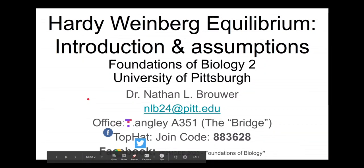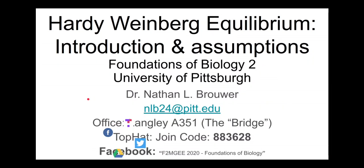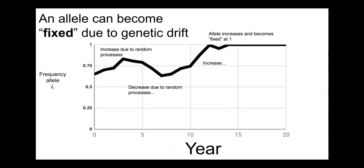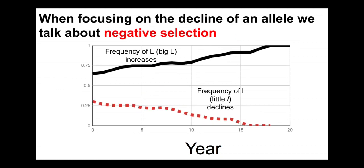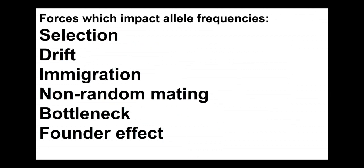In this presentation I will introduce what we mean by Hardy-Weinberg equilibrium and what the assumptions behind it are. Alleles can change due to a number of reasons — they can even become fixed, as we talked about in a previous presentation. Allele frequencies can bounce around due to genetic drift and even become fixed, or they can change due to positive or negative selection. There are many different forces that can cause allele frequencies to change: selection, drift, immigration, bottlenecks, and founder effects.